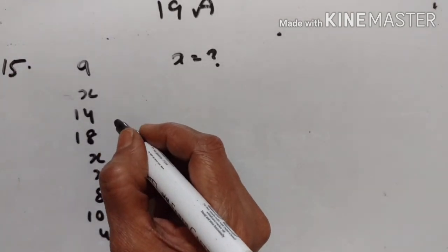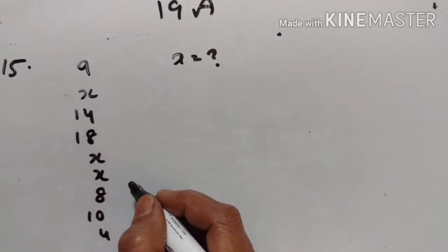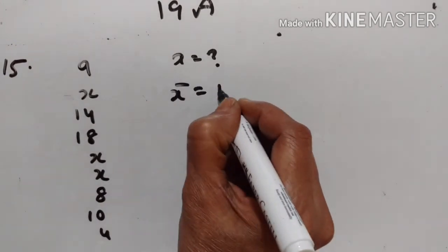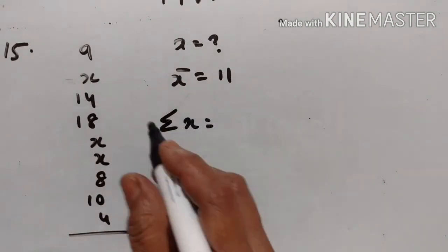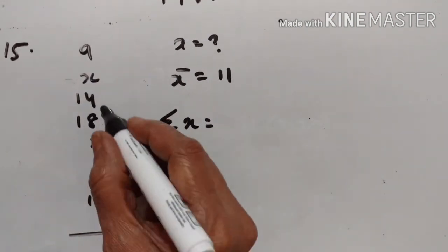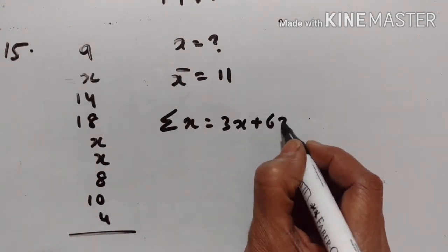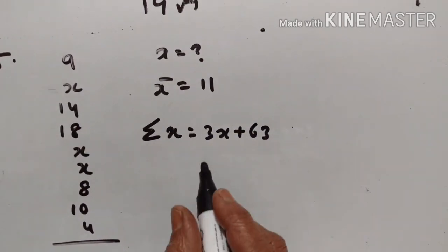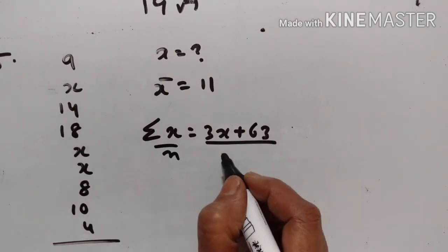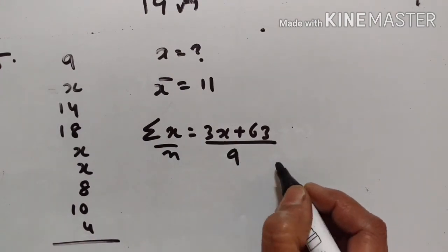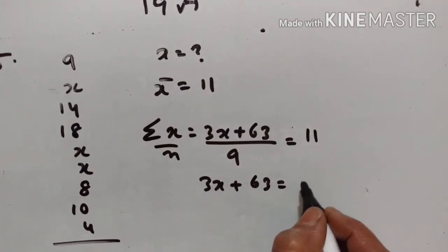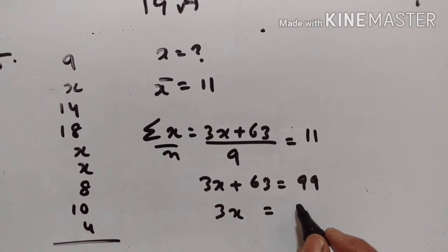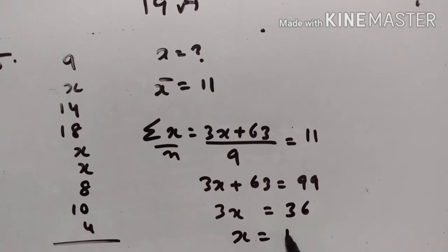Next problem: if 9x, 14, 18x, x, 8, 10, and 4 have a mean of 11 with 9 observations, find x. The sum is 3x plus 63. Sum divided by n equals mean: 3x plus 63 divided by 9 equals 11. So 3x plus 63 equals 99, giving 3x equals 36, therefore x equals 12.